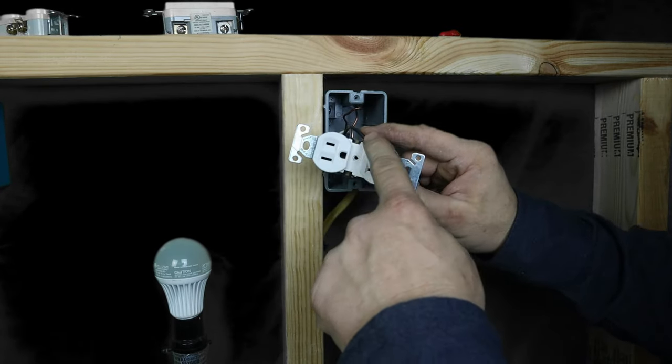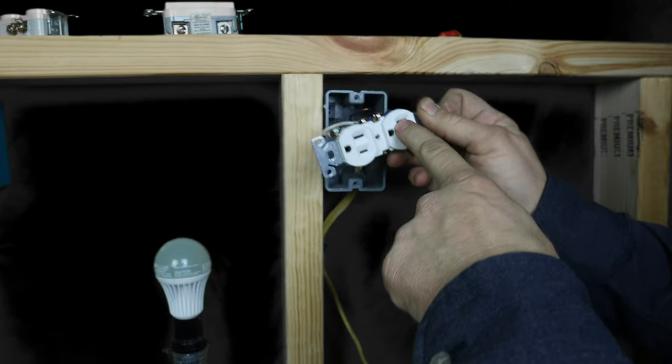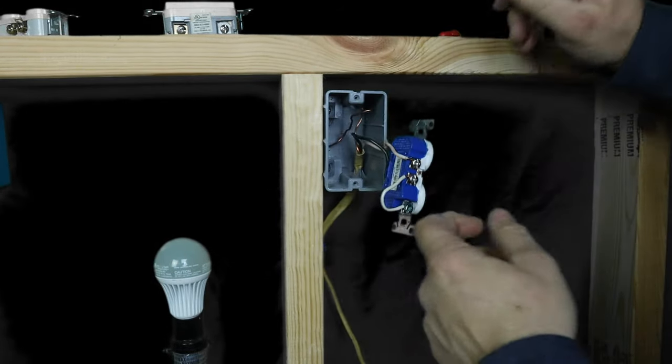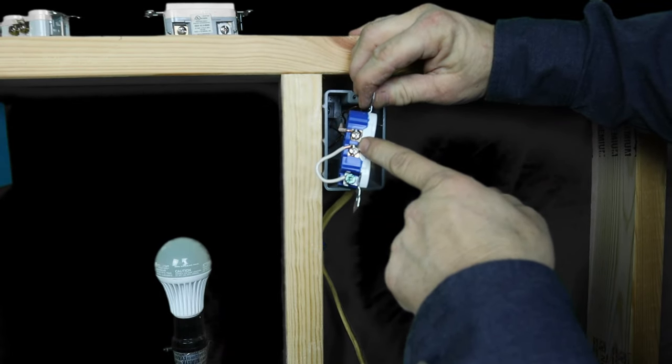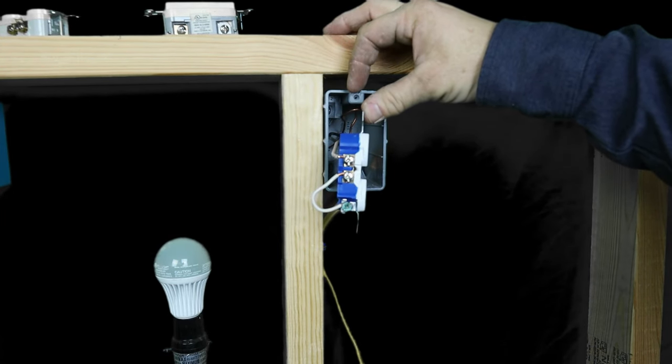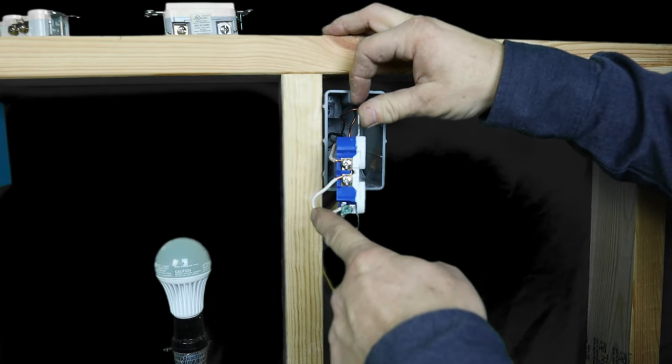So you have the hot on the right side which is good. We have the neutral on the neutral side which is good. But then what they did is they took a jumper from the neutral to the ground, which satisfied the tester and it is not right whatsoever because that is not a ground. This is just a neutral continuation. Do not do that.